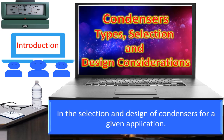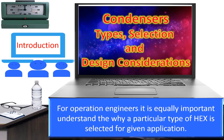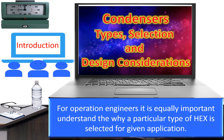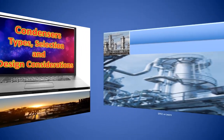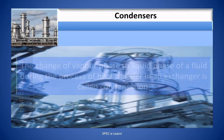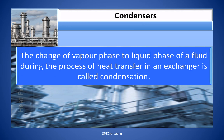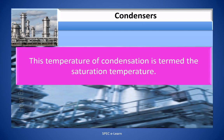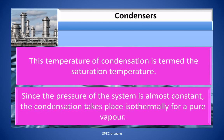For operation engineers, it is equally important to understand why a particular type of heat exchanger is selected for a given application. The change of vapor phase to liquid phase of a fluid during the process of heat transfer in an exchanger is called condensation. This change occurs at one temperature for a pure component at constant pressure — termed the saturation temperature. Since the pressure of the system is almost constant, condensation takes place isothermally for a pure vapor.